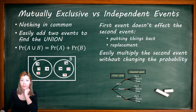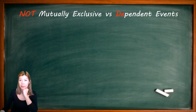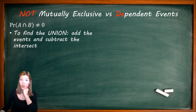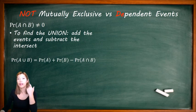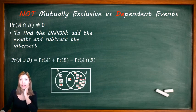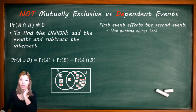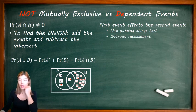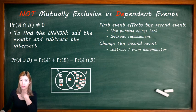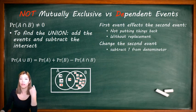They're not the same thing. Not mutually exclusive is when the intersect is not zero, so when you find A union B you add the events and subtract the intersect that gets accidentally added twice. Dependent events are when the first event does affect the second event — like not putting cards back, or eating lollies — called 'without replacement.' You change the second event and have to subtract one from the denominator: in the card example, the first event was 1 out of 3, and the second event was only 1 out of 2.